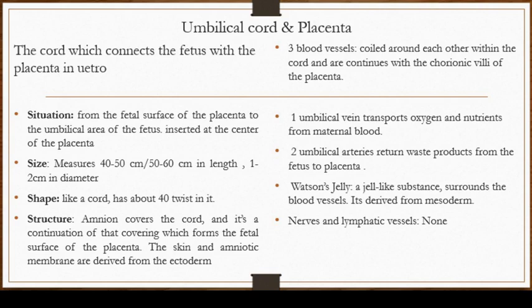When we look at the structure we find three blood vessels: one umbilical vein and two umbilical arteries. The umbilical vein transports oxygen and nutrients from the maternal blood, and the two umbilical arteries return waste products from the fetus to the placenta, where they fuse with maternal circulation for excretion.